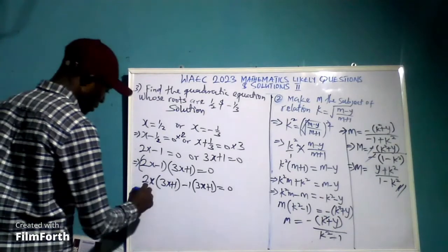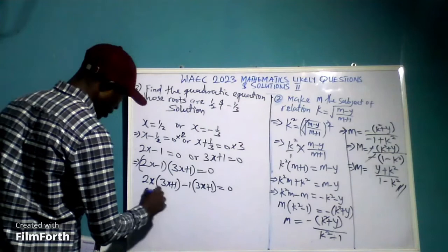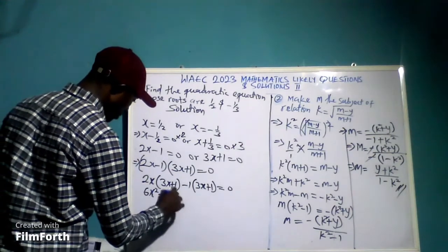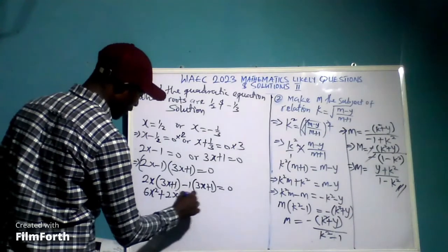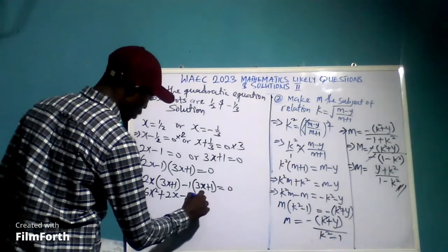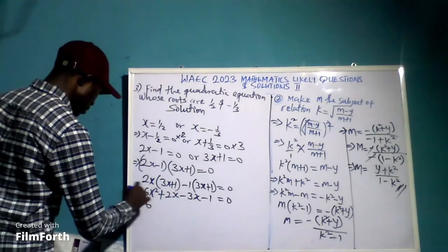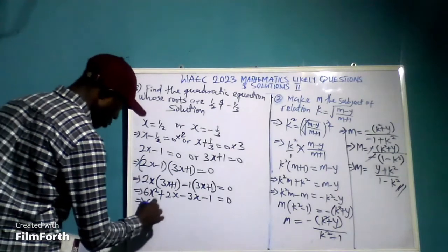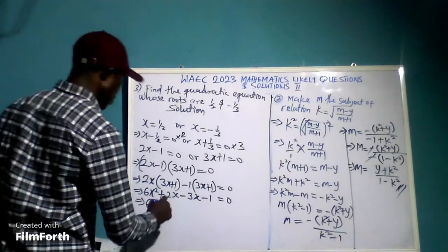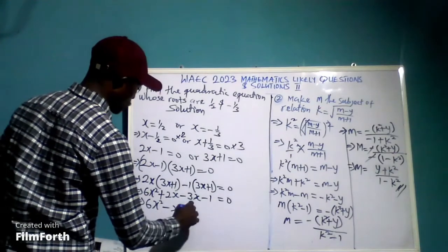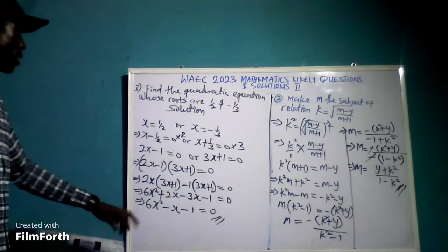If any of these factors equals zero, their product is zero. So we distribute: 2x over 3x plus 1, and negative 1 over 3x plus 1, all equal to zero. That gives 6x squared plus 2x minus 3x minus 1 equals 0, which simplifies to 6x squared minus x minus 1 equals 0. This is the quadratic equation we are looking for.